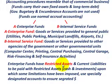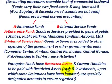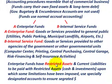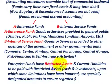Enterprise funds have restricted assets and current liabilities, where the current liabilities are to be paid out of the restricted assets. Those restricted assets would be for cash and investments upon which some limitations have been imposed, and specifically designated accounts are used to ensure the segregation of those cash or investments as restricted assets. When dealing with the internal service fund, we shouldn't be concerned with these restricted assets, because the internal service fund is likely not to be issuing any long-term debt.